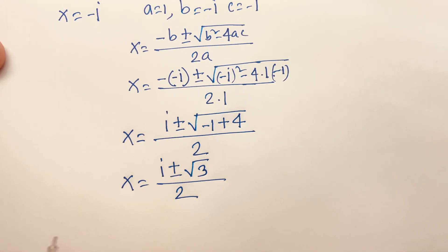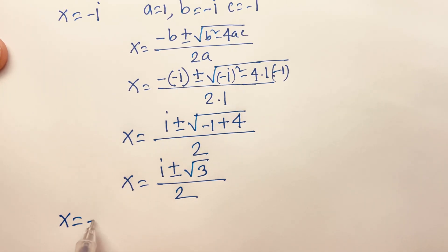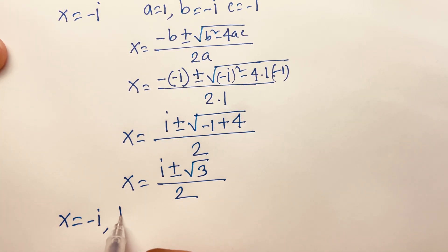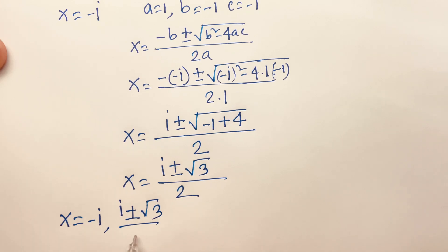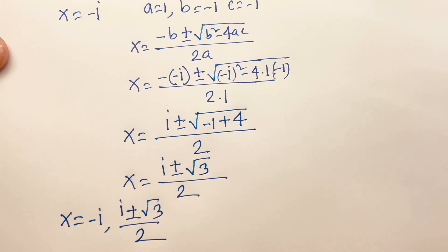So the values of x are: x equals i plus or minus square root of 3, all over 2. Combined with the first case, the three cube roots of i are: minus i, and (i plus or minus square root 3) over 2.